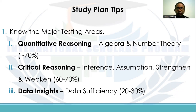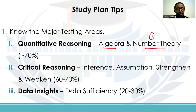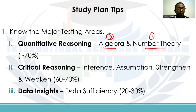Algebra and number theory overlap — some concepts in algebra actually borrow or build on concepts from number theory. So it's always recommended that you start with number theory first and then move on to algebra. Once you're done with these two sections, you've covered quite a chunk of Quantitative Reasoning. You can then go on to the rest of the topics like combinatorics, probability, and statistics.